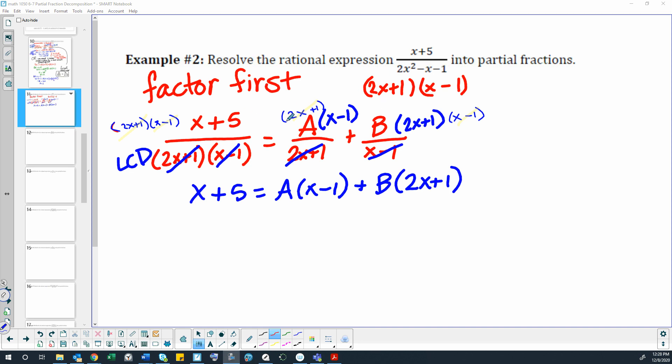Then we multiply everything by the least common denominator. Lots of stuff cancels out to get rid of our fractions, and we're left with this equation here without fractions.